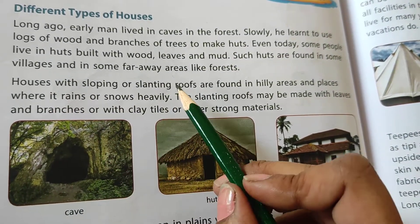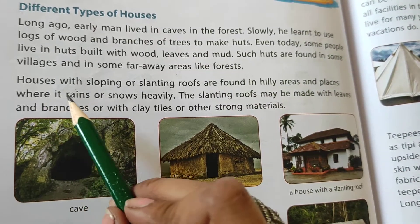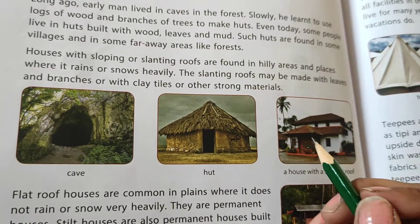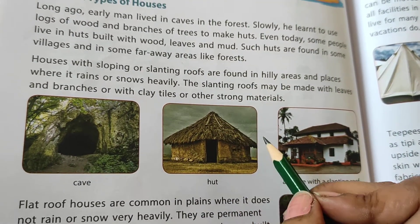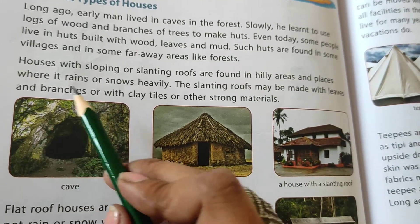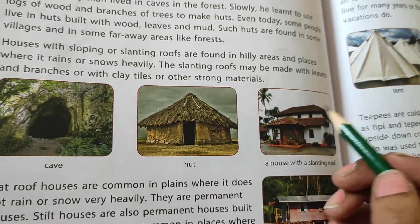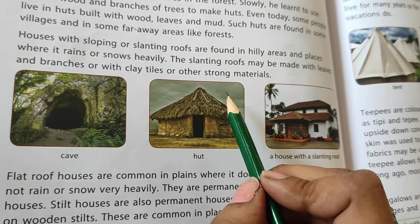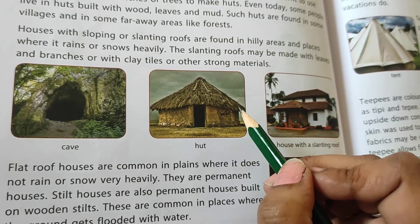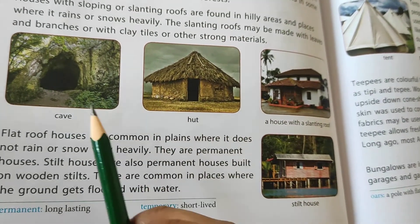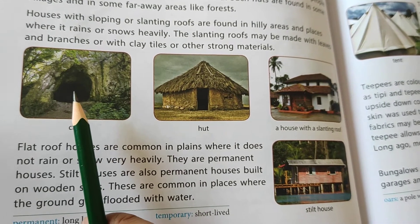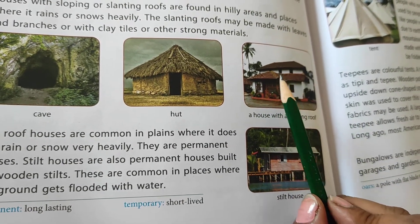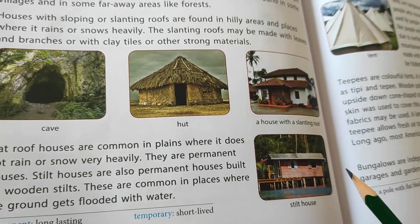Houses with sloping or slanting roofs are found in hilly areas and places where it rains or snows heavily. Hilly areas में जहाँ पर बहुत ज़्यादा तेज बारिश होती है या snow गिरती है, तो ऐसे घरों की छत slanting होती है — टेड़ी होती है. The slanting roofs may be made with leaves and branches, or with clay tiles or other strong materials. Here you can see some pictures — this is a cave in which man used to live in old times, then we have a kaccha house like a hut, and a house with a slanting roof so that it can protect from heavy rain or snow.